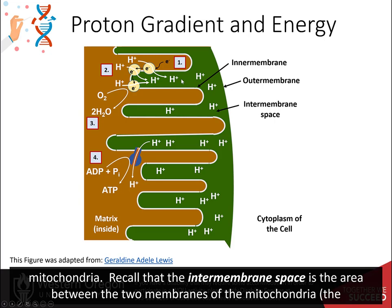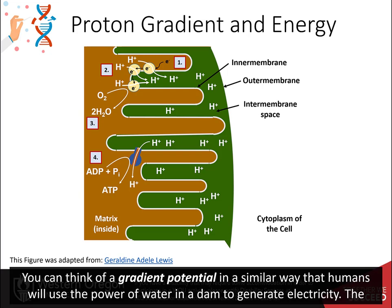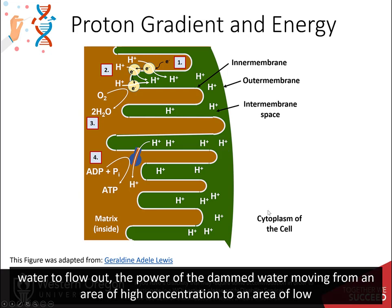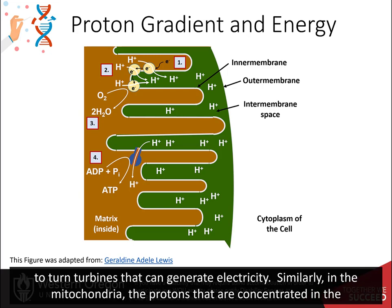The intermembrane space is the area between the two membranes of the mitochondria — the inner membrane and the outer membrane. As the intermembrane space becomes full of protons, this creates a gradient potential. This can be compared to how humans use the power of water in a dam to generate electricity: the dammed water holds potential energy, and when released in a controlled way, its movement from high to low concentration turns turbines to generate electricity.